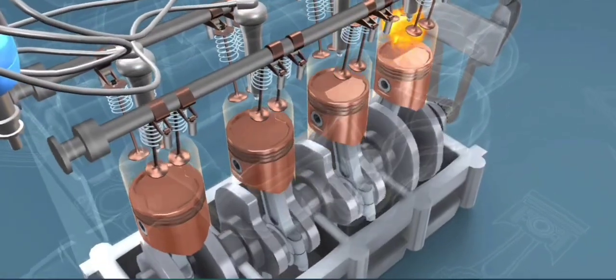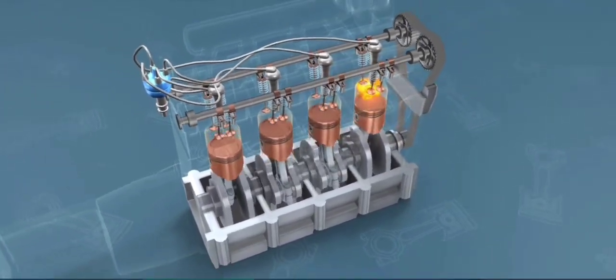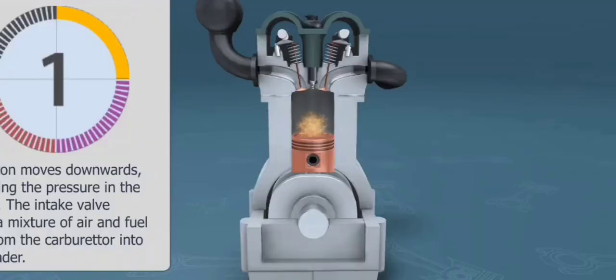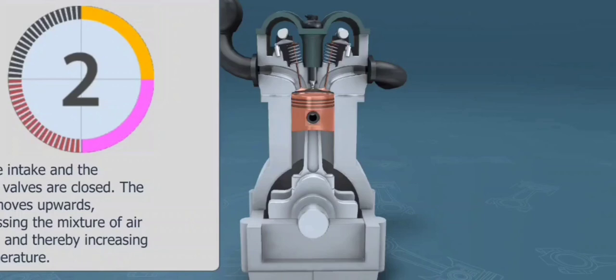While Atkinson's original design is no more than a historical curiosity, many modern engines use unconventional valve timing to produce the effect of a shorter compression stroke to longer power stroke, thus realizing the fuel economy improvements the Atkinson cycle can provide.